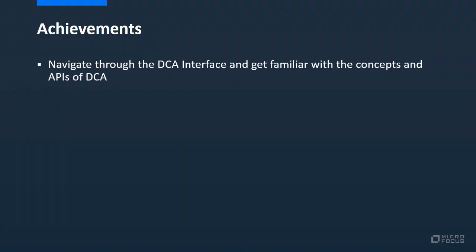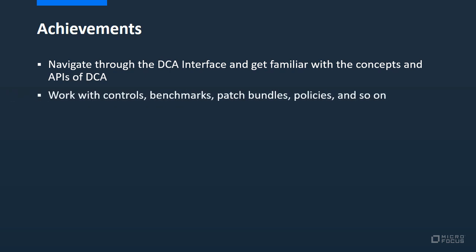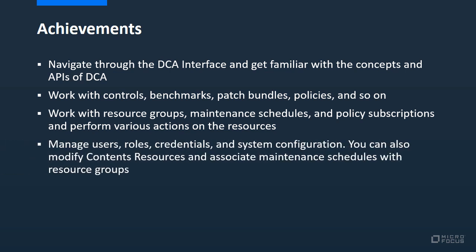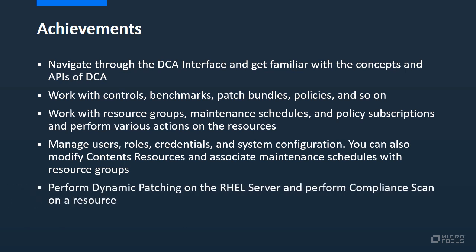By the end of this course, you will know how to navigate through the DCA interface and get familiar with the concepts and APIs of DCA. Work with controls, benchmarks, patch bundles, policies, and so on. Work with resource groups, maintenance schedules, and policy subscriptions, and perform various actions on the resources. Manage users, roles, credentials, and system configuration. You can also modify content resources and associate maintenance schedules with resource groups, perform dynamic patching on the RHEL server, and perform compile and scan on a resource.